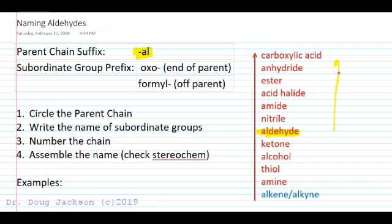If there's a higher priority group on this list that's in your compound, we'll name it as an ester or an acid halide or an amide, one of those higher priority groups as the parent chain, and then the aldehyde will be subjugated to a normal group.